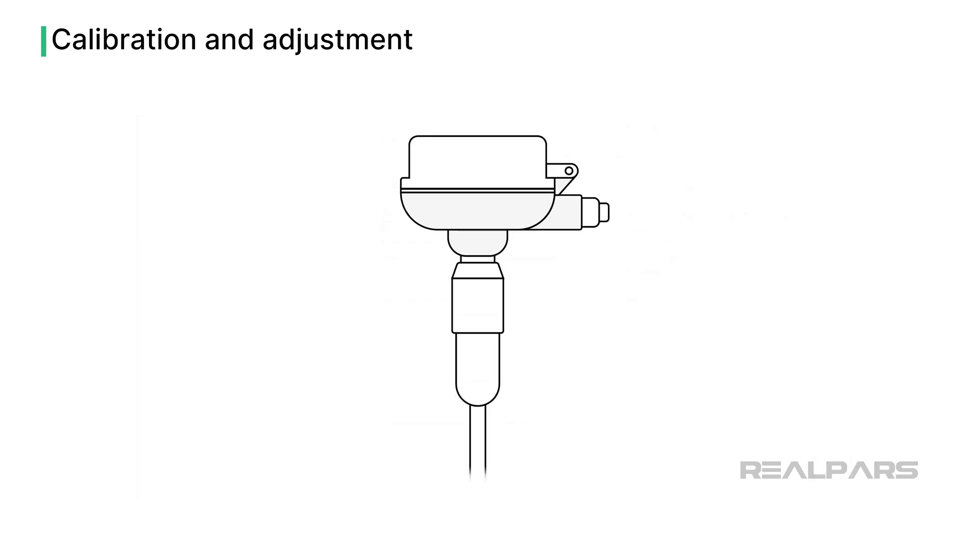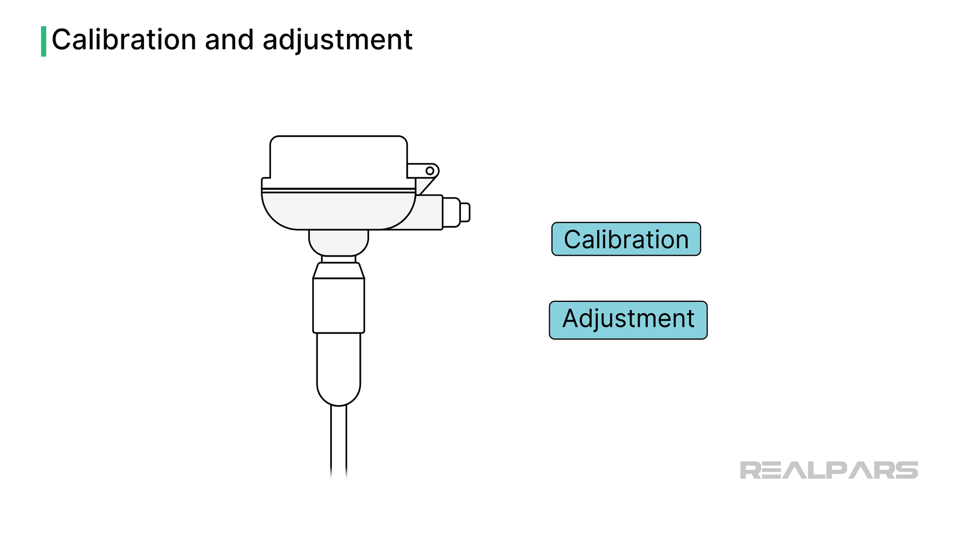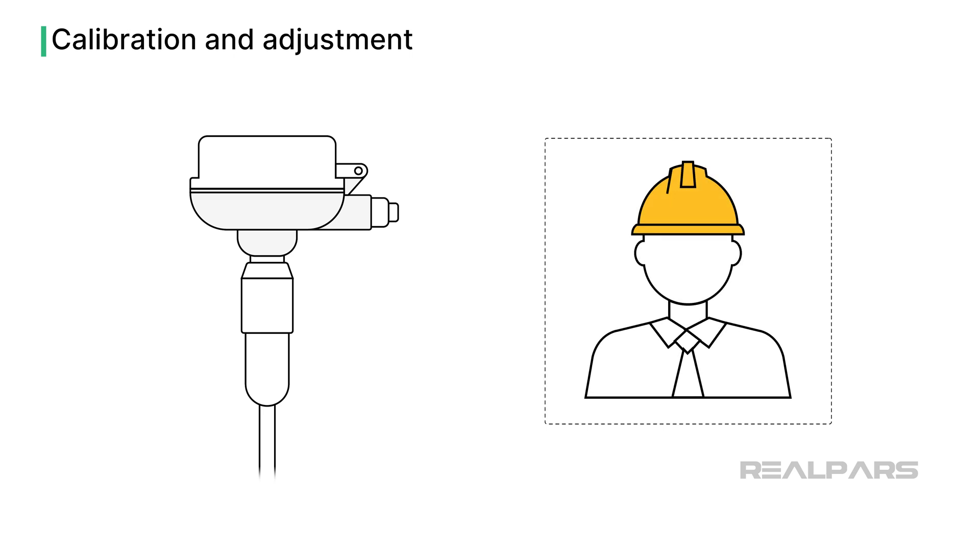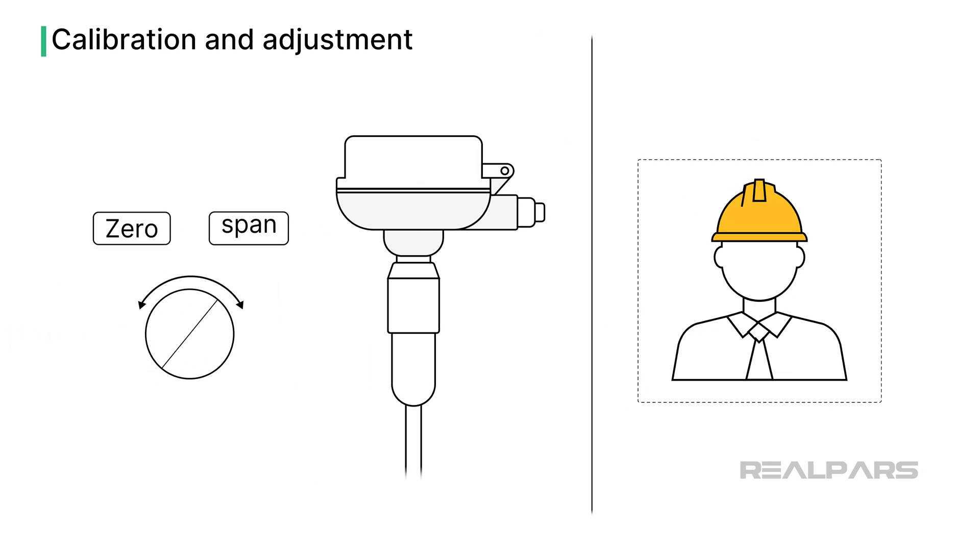People often use the terms calibration and adjustment interchangeably depending on who you talk to. To illustrate, field engineers and instrumentation technicians often discuss calibrating a transmitter when they adjust the zero and span settings.